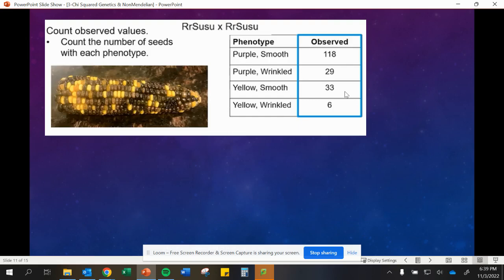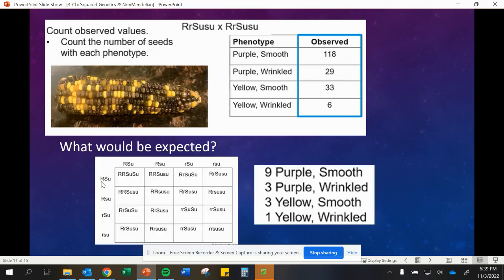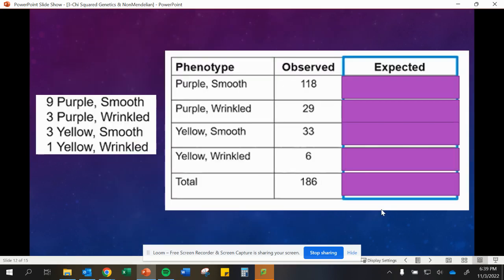How we would do this is we would count. We have a tally of our observed phenotypes, just like we see here. What would we expect? In this case, we can kind of see that yellow and wrinkled are really small, and these are kind of similar. One thing you might notice is maybe we have a 9 to 3 to 3 to 1 ratio. If we have this ratio, that means we have heterozygous individuals all around. If that were the case, and we have that 9 to 3 to 3 to 1 ratio, we need to figure out what ratio that would be for the 186 individuals we have total. We add up all of them total, 186.